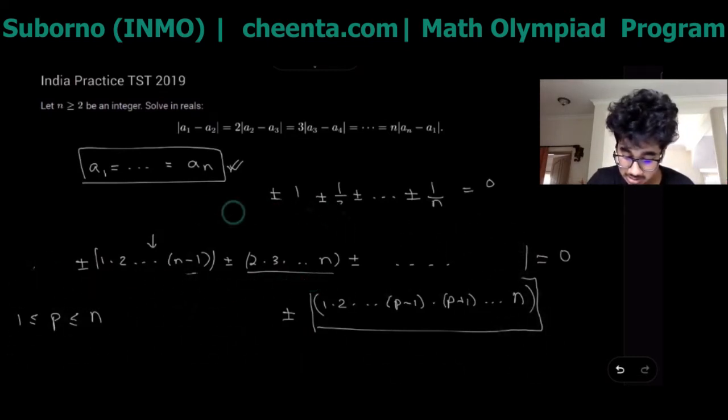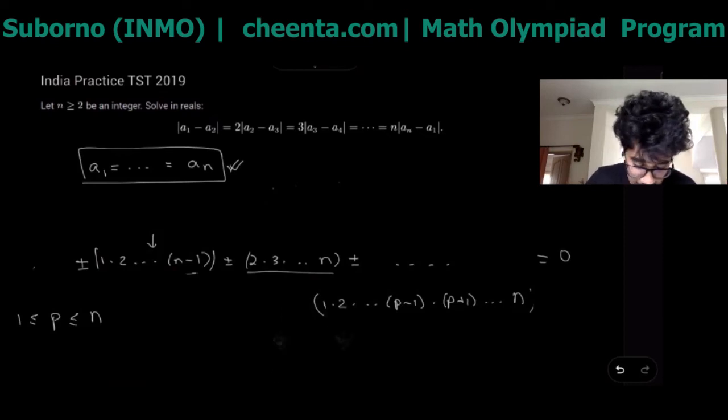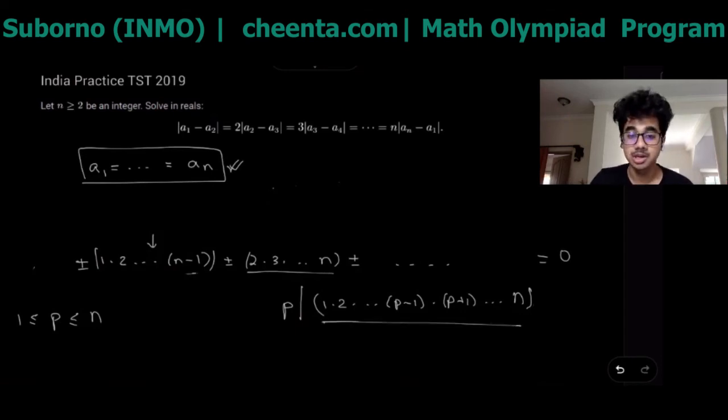So p divides the whole thing and this is the last term left so p must divide this term as well. What does this whole thing give us? It gives us that p must divide this term. This term is the one which doesn't contain p but p has to divide it because p divides every other term in the sum and the overall sum is also divisible by p because it's just zero.